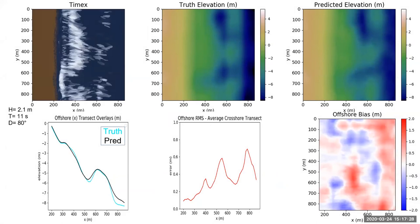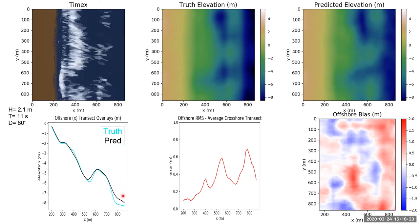In the top left, you can see an example of the Timex portion of the input features, along with the ground truth and the predicted elevation on the top right. Below the Timex, you can see the ground truth cross-shore transect in cyan and the predicted transect in black, along with cross-shore RMS values and the offshore bias between predicted and true elevation — where blue means the prediction is too deep and red means too shallow. In this example, the wave height is 2.1 meters, the period 11 seconds, and the direction 80 degrees. This image has a very wide surf zone, so there is pretty good accuracy almost everywhere, except very far offshore where there are very little to no breaking waves to give information to the algorithm.